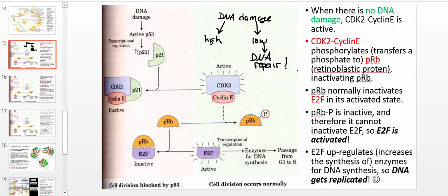But if you have high DNA damage where the damage is too significant, what will end up happening is the cell realizes there's too much damage to repair. The cell would actually rather die than risk replicating and sending mutated DNA into future generations of cells. So if there's too high DNA damage, the cell will undergo apoptosis — programmed cell death.